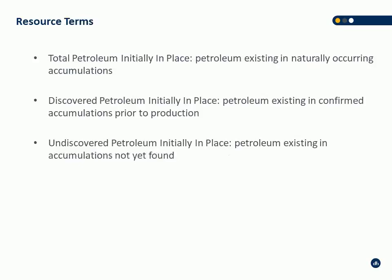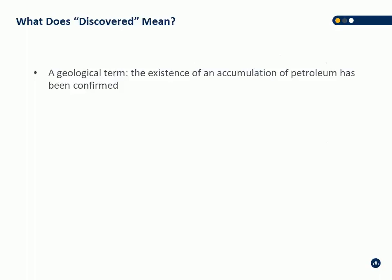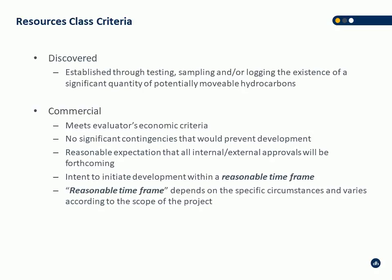Total petroleum initially in place is every molecule. The discovered petroleum initially in place is what has been penetrated and known to be hydrocarbon-bearing. Undiscovered petroleum in place is petroleum in accumulations that have not yet been found. Discovery can be established through testing, sampling, and/or logging the existence of a significant quantity of potentially movable hydrocarbons. The key concept here is 'significant quantity' — because of commerciality requirements, tiny reservoirs not likely to produce commercially viable amounts don't qualify as discovered.